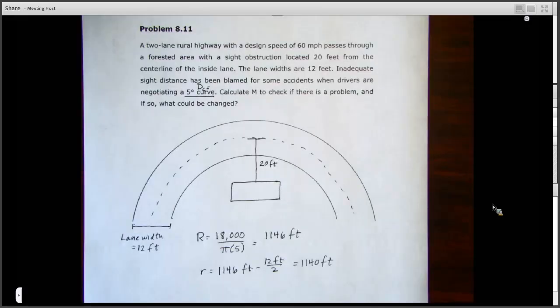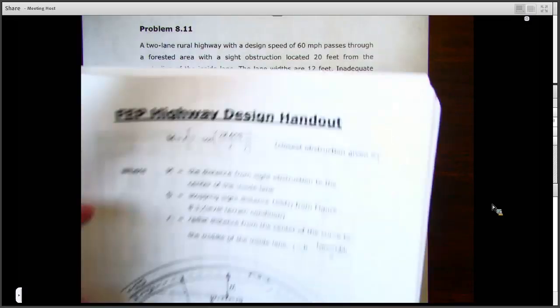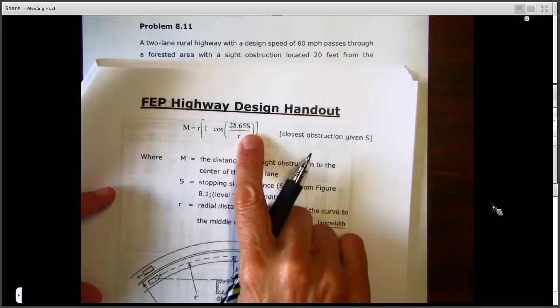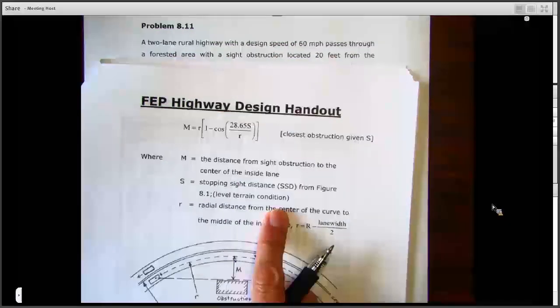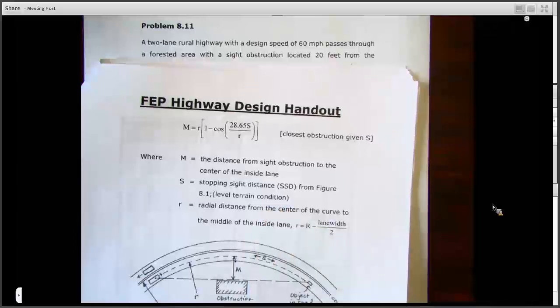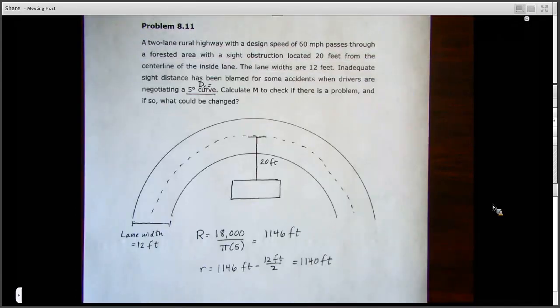And then the other variable we're going to need to solve this problem is the S, capital S. Remember, capital S stands for the stopping sight distance here, and that's from figure 8-1. We're going to assume a level terrain, and so we've got our capital S here. We'll go back to figure 8-1, and we know our design speed here is 60 miles per hour.